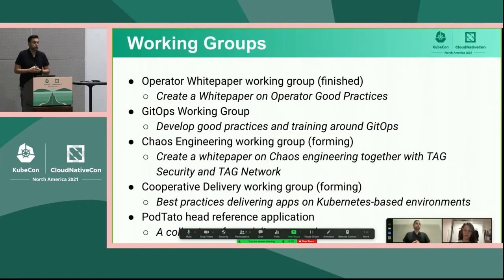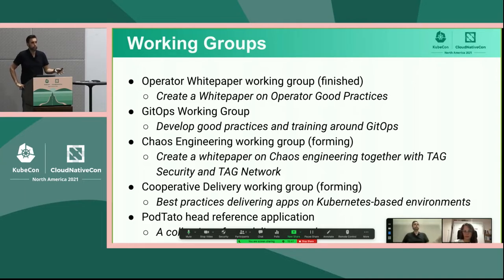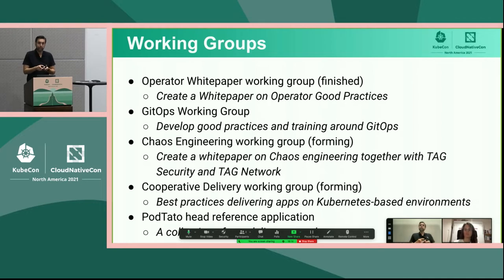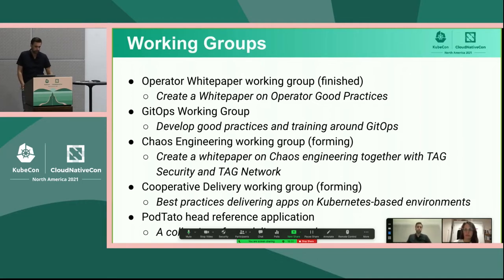There are a number of working groups within Tag App Delivery. Tags mainly do two things: they support the TOC on due diligence for projects, and they look into new areas where work needs to be done. The first was the Operator White Paper Working Group, which wrote the white paper on operators. Who here is using operators today, or actively developing them? We had all this notion of an operator, but there was no detailed white paper on how to develop them or what the principles are.